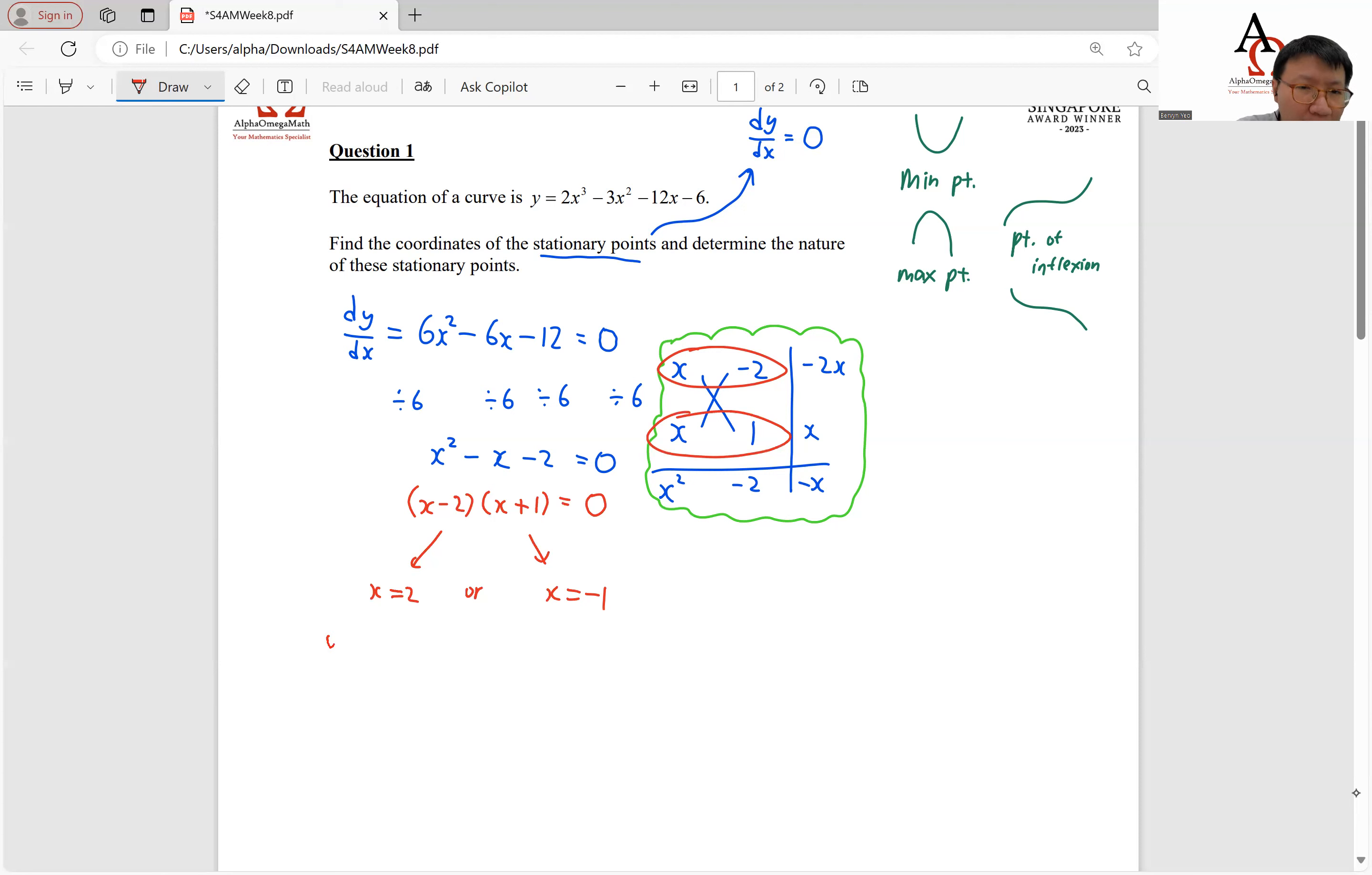So what we have over here is y equals to 2 times 2 cubed minus 3 bracket 2 squared minus 12 times 2 minus 6. And if we solve this, we will have 16 minus 12 minus 24 minus 6, so 4 negative 20 and negative 26 is our y coordinate for this.